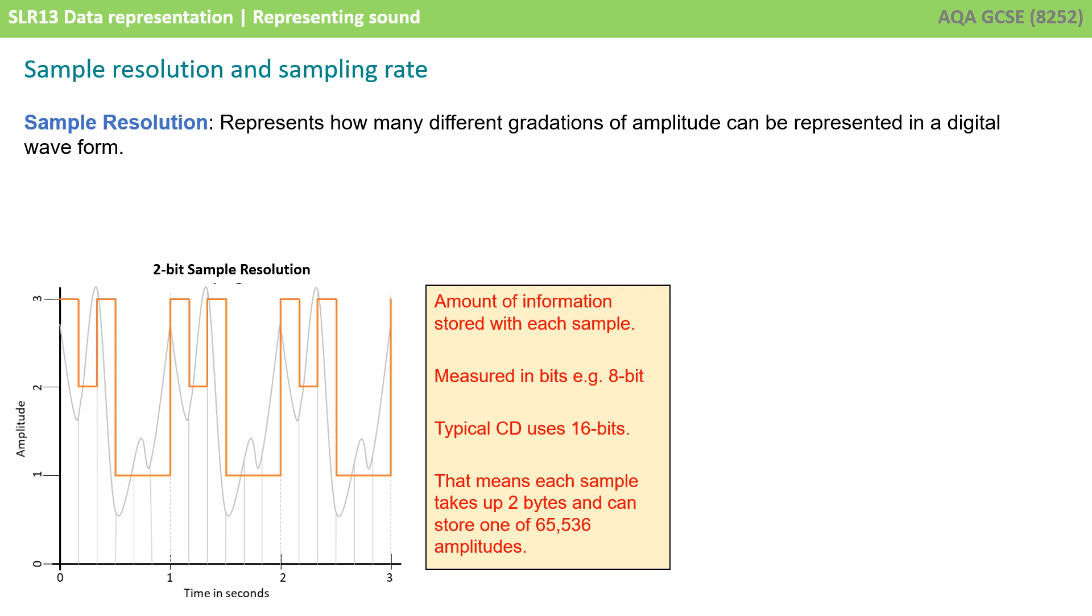A typical CD uses a 16-bit sample resolution, and that means that every time it takes a sample of the analog waveform, it's taking up and storing 2 bytes. But each of those can store one of 65,000 different amplitudes.